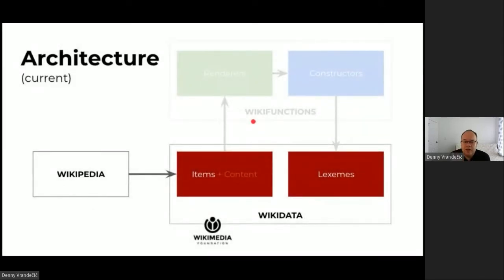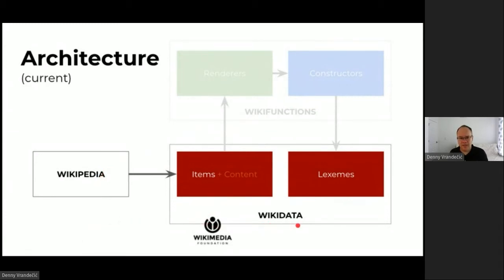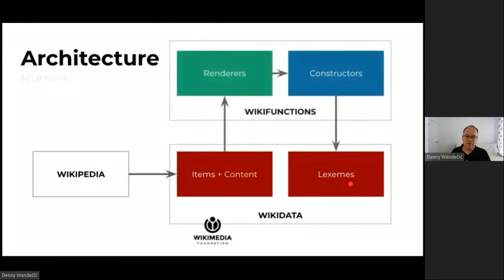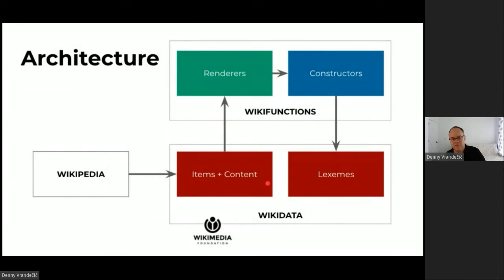We now have a system where each language needs one set of renderers and each topic has only one content — not one article per language. This separates the cost of languages and topics, reducing the cost of Wikipedia by two promised orders of magnitude. We already have some pieces in place: Wikipedias can access item information from Wikidata, we have lexicographical knowledge in Wikidata since 2018. What we're building now is Wikifunctions — to store the renderers and constructors, which will allow storing content in Wikidata.